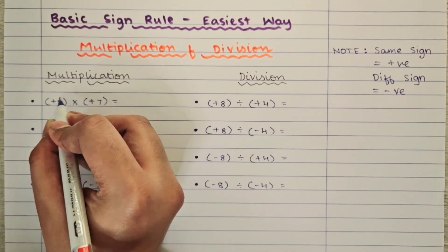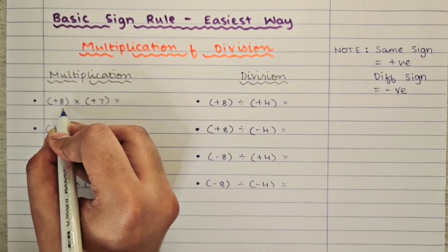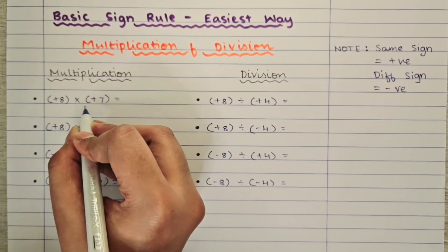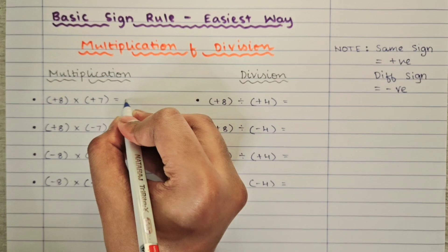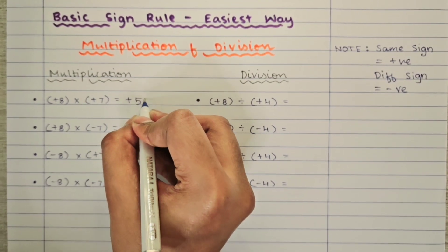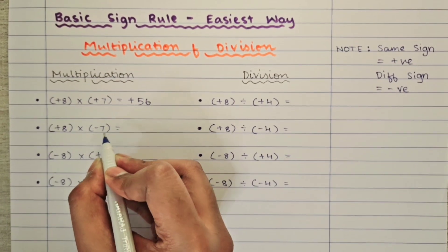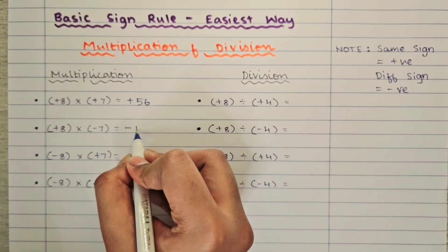First we will focus on multiplication. Plus 8 into plus 7. Both signs are positive, so it is a positive number, plus 56. Next, plus 8 into minus 7. Different digits, minus 56.